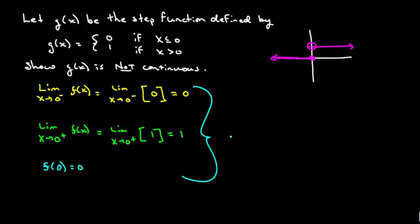this is your reason for discontinuity at x equals zero. Now if you tried at any other x value, it would be continuous. But here it's clearly not continuous because we have this what we call jump discontinuity.